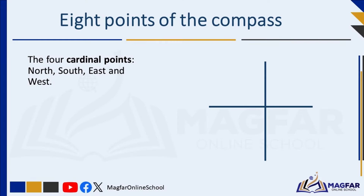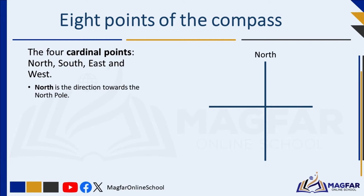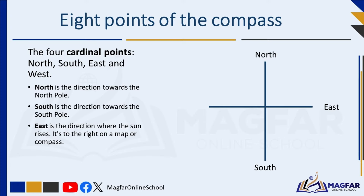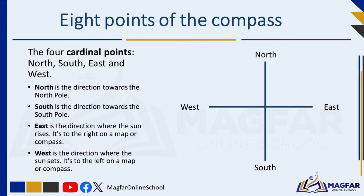Cardinal points and intermediate points are terms used to describe directions on a compass or a map. Cardinal points are like the main directions, helping us navigate and understand where things are located. There are four cardinal points: North, South, East, and West. North is the direction towards the North Pole — it's the top on a map or compass. East is the direction where the sun rises, to the right on a map or compass. West is the direction where the sun sets, to the left on a map or compass.